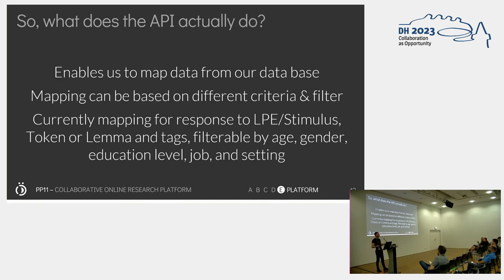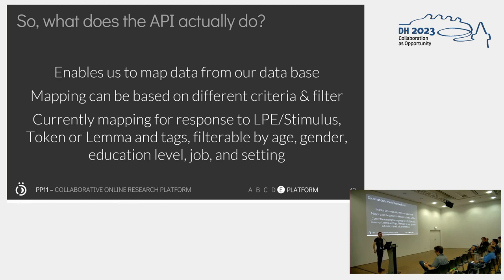In other words, the API enables us to map the data directly from our database — the source of our data is the database our researchers use. We can do this mapping based on different criteria and filters. Currently, for the language production experiments, we're mapping for token or lemma, for tags, for the manual annotations, and all of this can be filtered by the age, gender, education level, and job of the informant, and the setting in which the language data was produced.